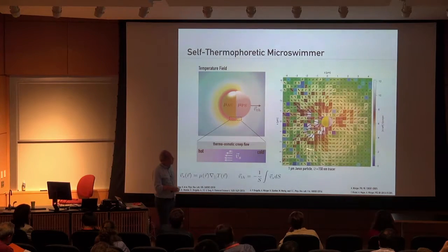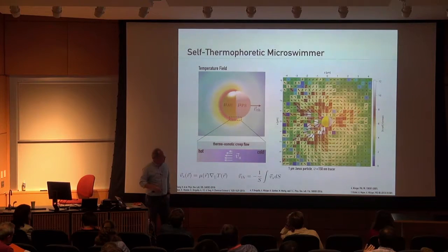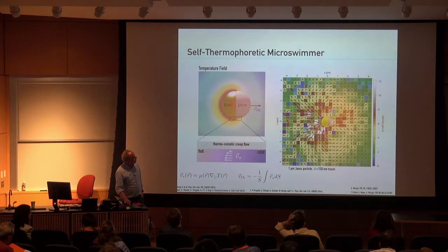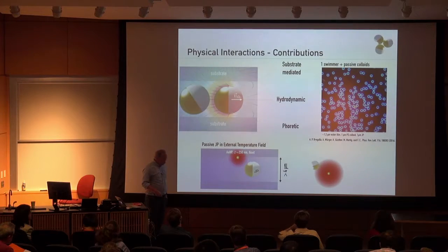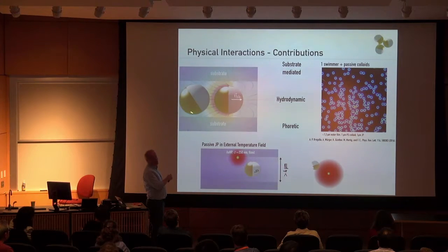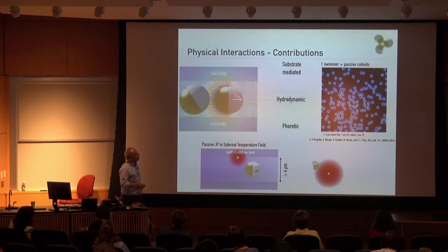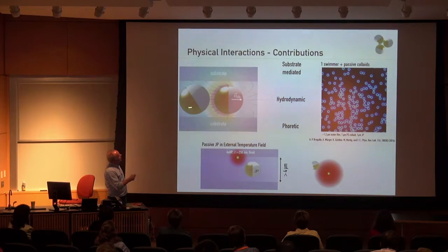We can even measure the flow fields around fixed particles — a kind of pumping fixed particle — and we characterize that really well and know how to control it. That's the central point of the story I want to present: you can control these particles to understand the interactions of individual swimmers. The phase behavior of such collective ensembles depends on these interactions, and we would like to find out what the interactions between individual swimmers actually are.